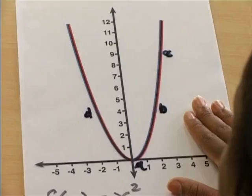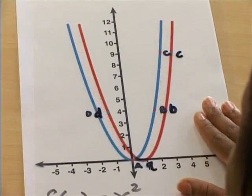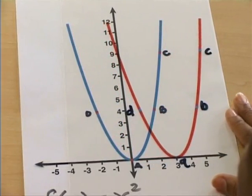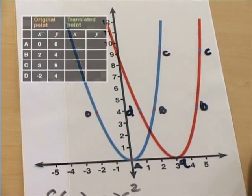Now, please move the graph three units to the right and let's see what happens to the new coordinates of those points. So, Teboho, will you please record the coordinates of the translated points?